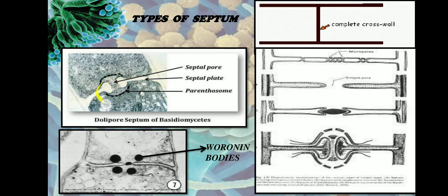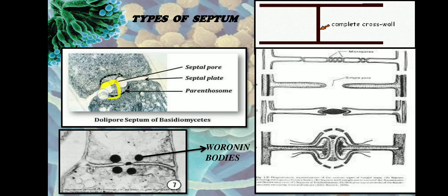The barrel-shaped swelling forms around the central pore of the septum, and the size of that swelling is usually 0.1 to 0.2 micrometers wide. Such a septum — where the hyphae swells near the central pore — is called a dolipore septum.